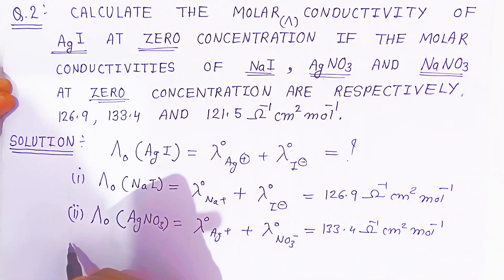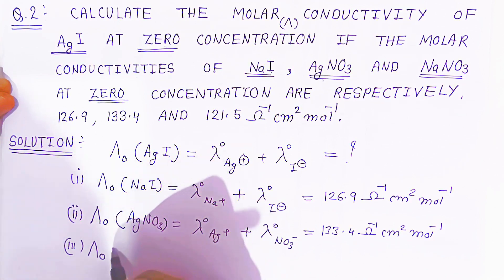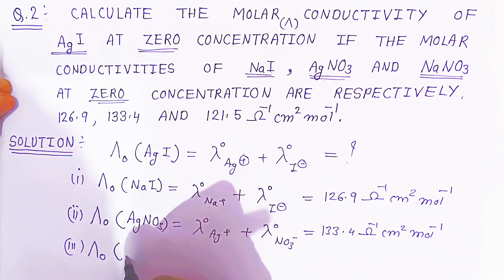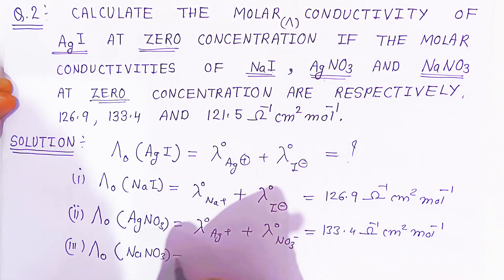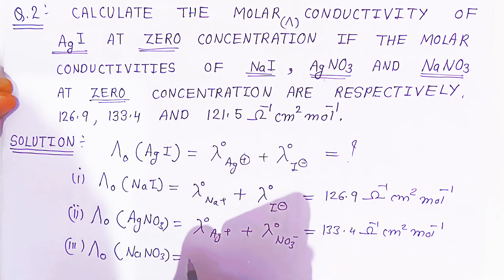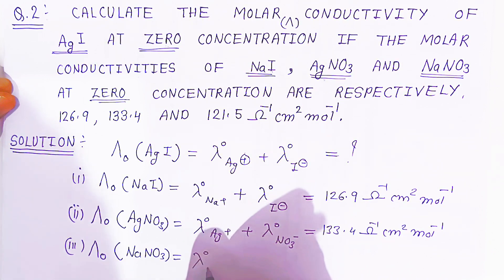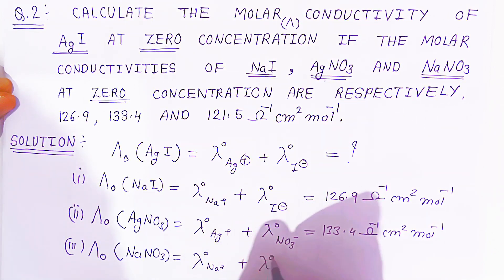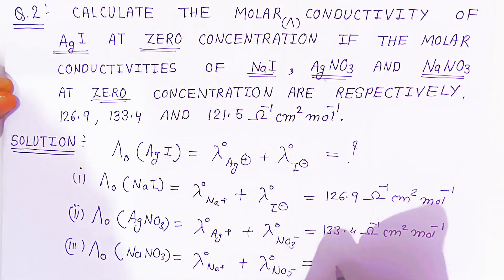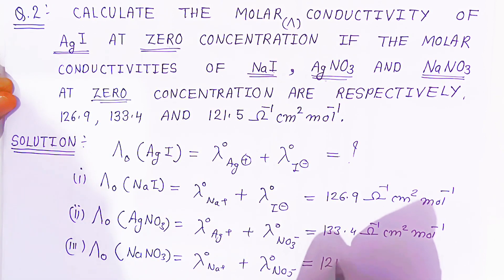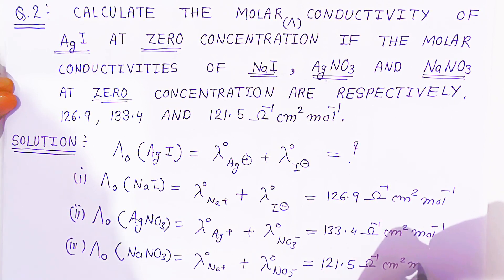Now for sodium: the molar conductivity at zero concentration of sodium nitrate is written as the molar conductivity of sodium-plus and molar conductivity of nitrate. This is given as 121.5 ohm inverse centimeter square per mole.